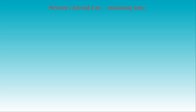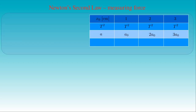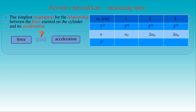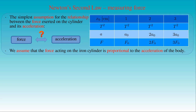The greater the maximum amplitude we choose, the more we stretch or compress the springs, and the more elastic force they exert on the cylinder. We interpret the result as follows: let the force F0 act on the oscillating cylinder at the maximum amplitude of 1 cm with acceleration A0. Then the force 2F0 will act on the body when it has acceleration 2A0 at maximum amplitude 2 cm. Similarly, acceleration 3A0 at maximum amplitude 3 cm is produced by force 3F0. Therefore, the force acting on the iron cylinder is proportional to the acceleration of the body.